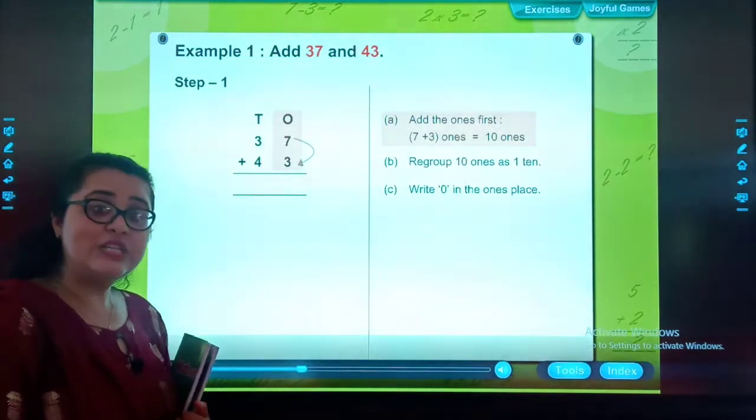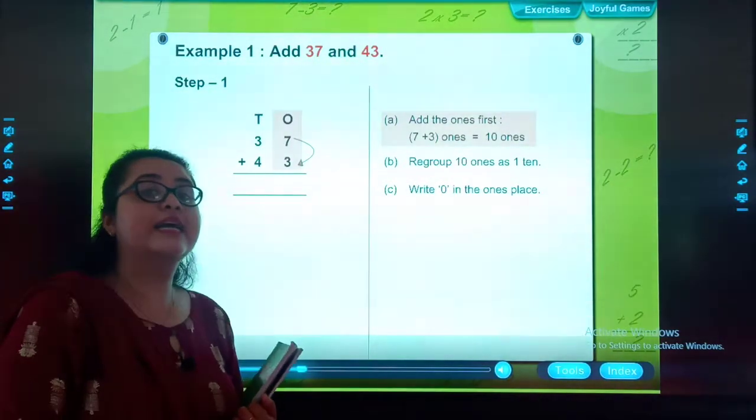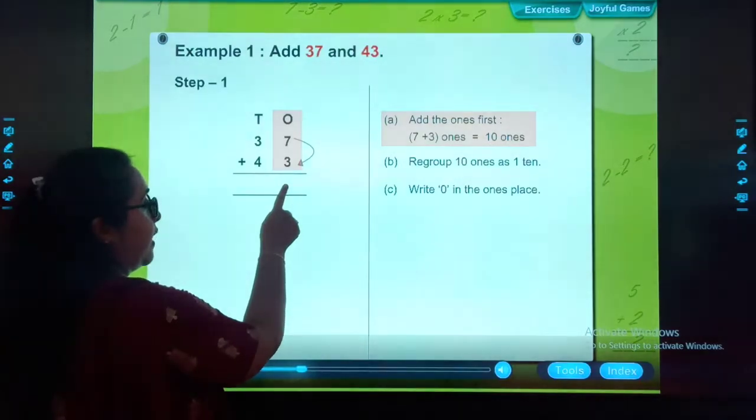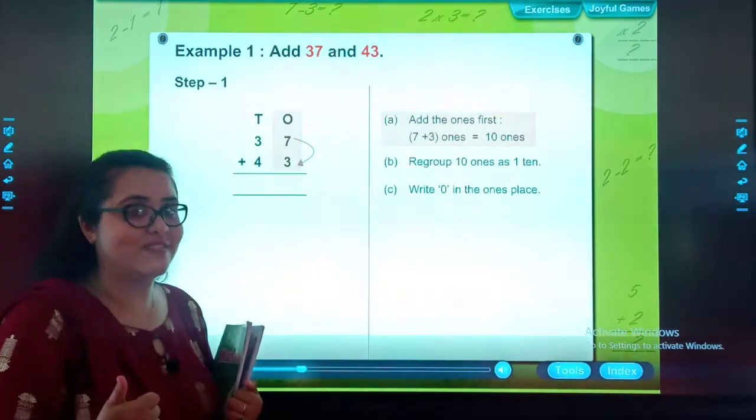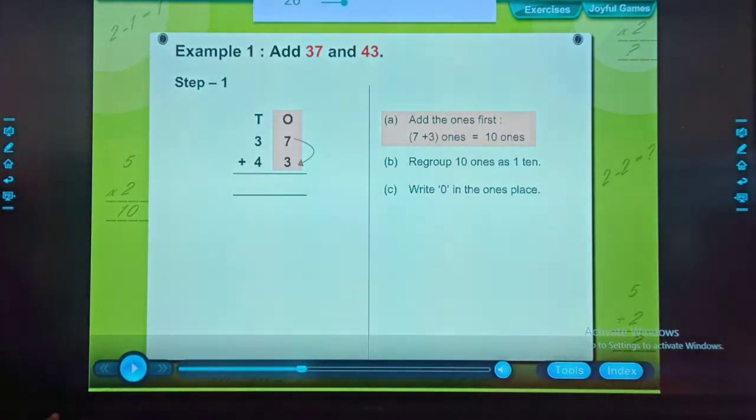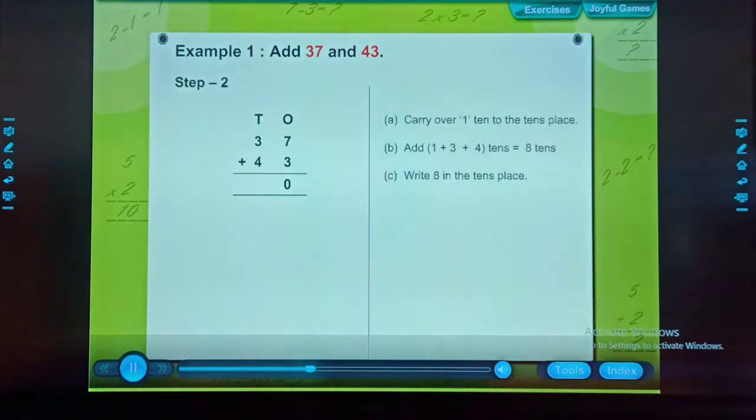Okay students, the condition is, if the ones part equals 10, we write 0 in the ones place and 1 will carry forward. Okay? Relax, it's so easy right? Step 2, add 1 to the tens part. Add 1 plus 3 plus 4 tens, which is equal to 8 tens. Write 8 in the tens place.